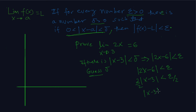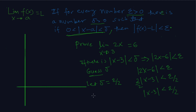So we get that x minus 3 is less than epsilon over 2. This tells us what to choose for delta. Let delta equal epsilon over 2.